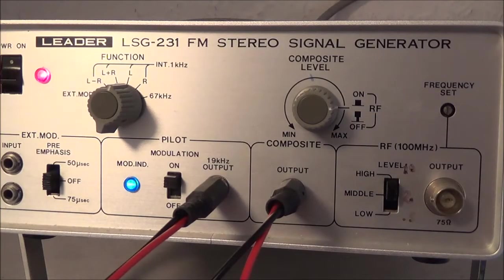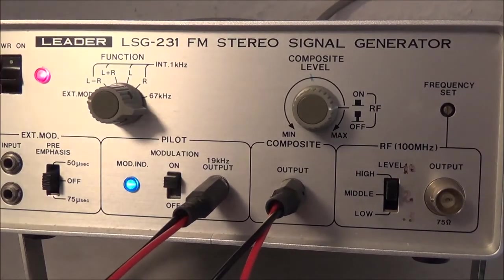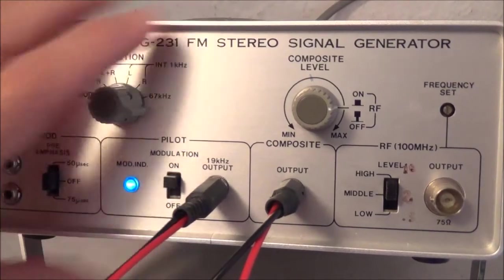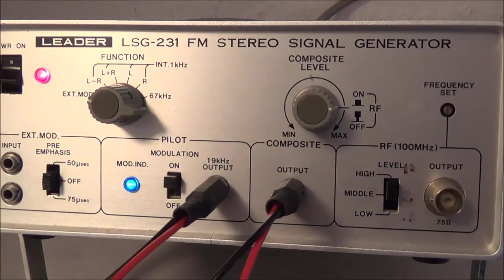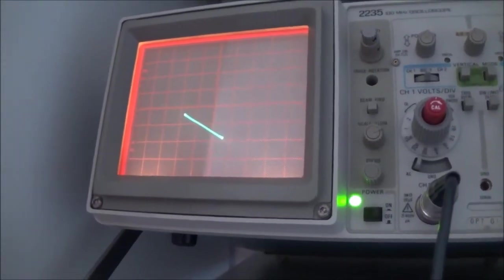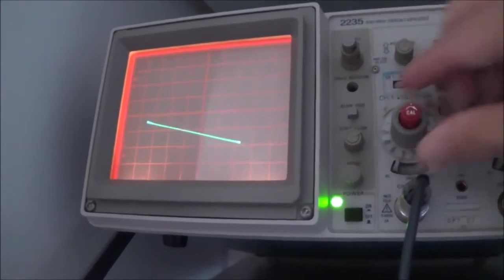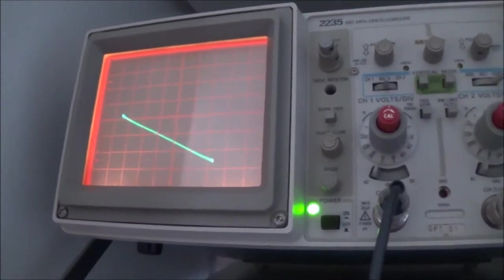So now to do the actual adjustment, the function switch will be set to external modulation. The pilot switch is on and then we put the scope in the XY position so we get a slanted line. And let's go ahead and do that. So here we go, the scope is in the XY position and we have to play around with the little controls now.